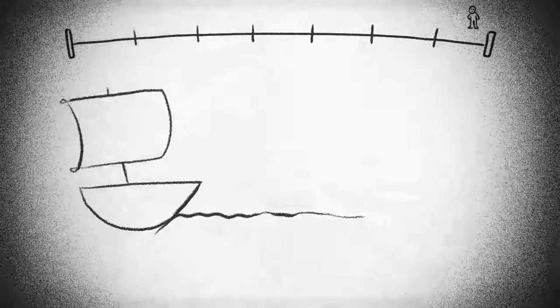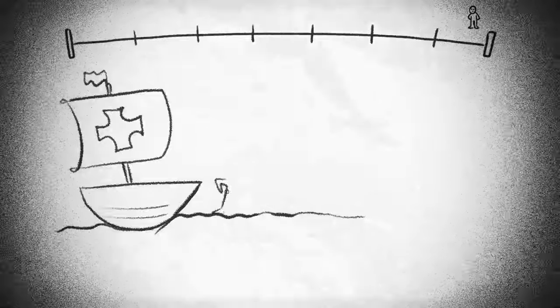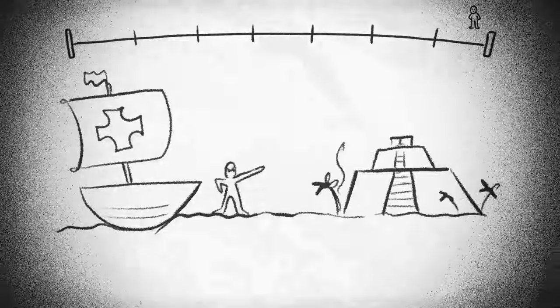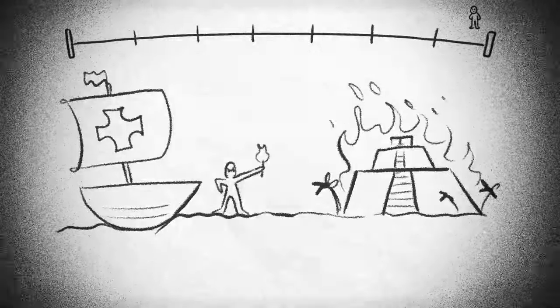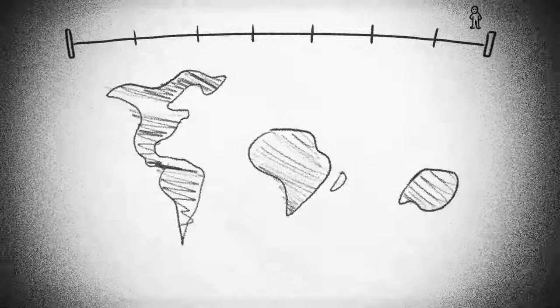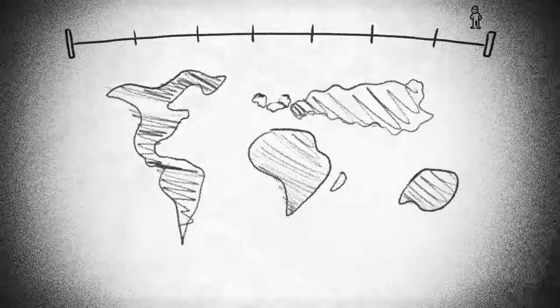European colonial empires, including Portugal, Spain, England, France, and the Netherlands, engaged in extensive crusades, exploiting resources and destroying cultures like the Aztecs, Incas, and Mayans. They established colonies in Africa, the Americas, Asia, and Oceania.